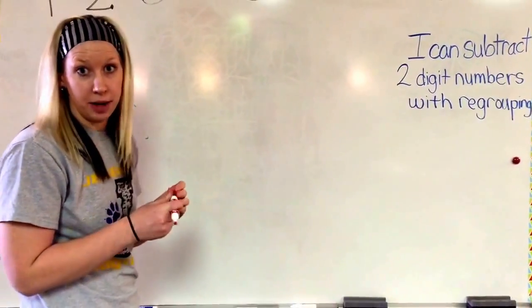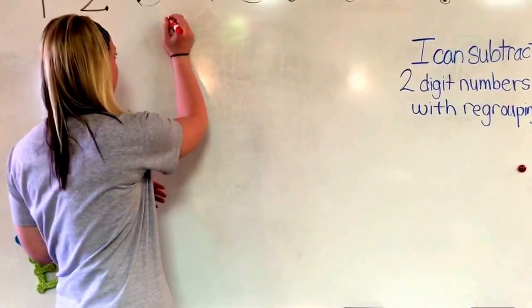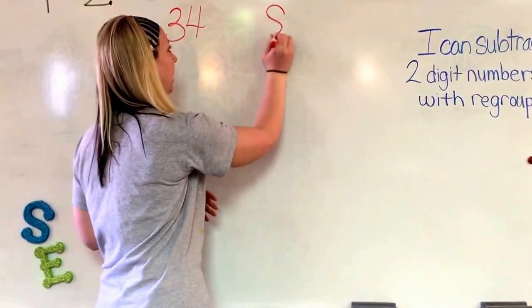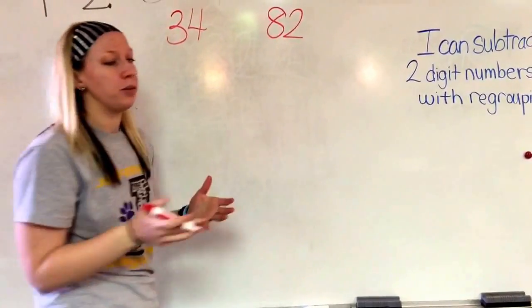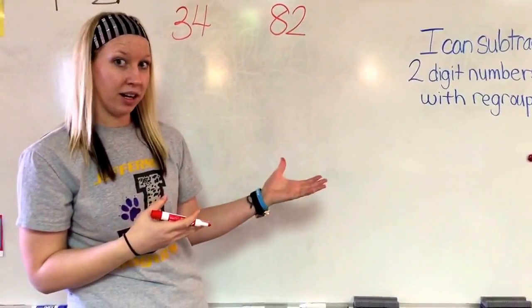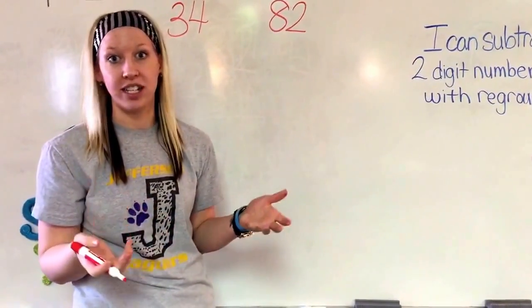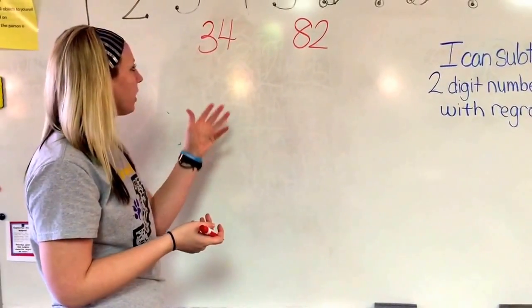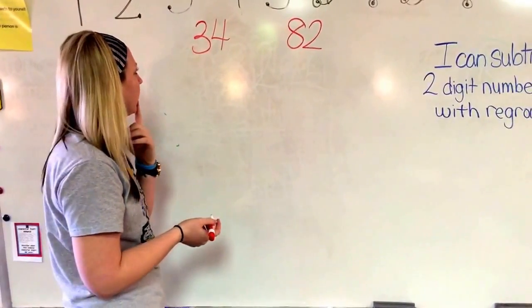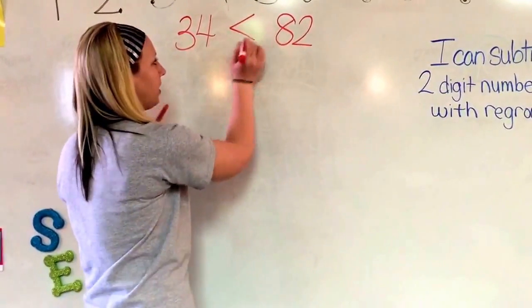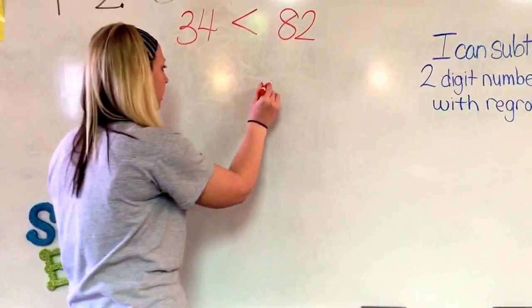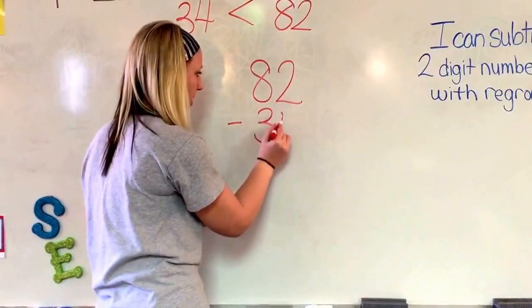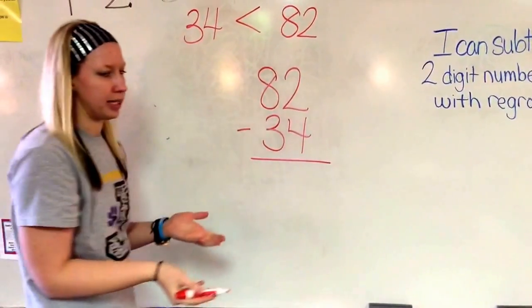When you have two numbers and you're going to subtract, let's say we have the number 34 and we have the number 82. With subtraction, we know that whichever number is greater always has to go on top. Otherwise, we can't subtract. So I'm thinking, 34 or 82, which one is greater? Well, I know that 82 is greater. So I'm going to put 82 on the top of my subtraction problem, and now I'm ready to subtract.